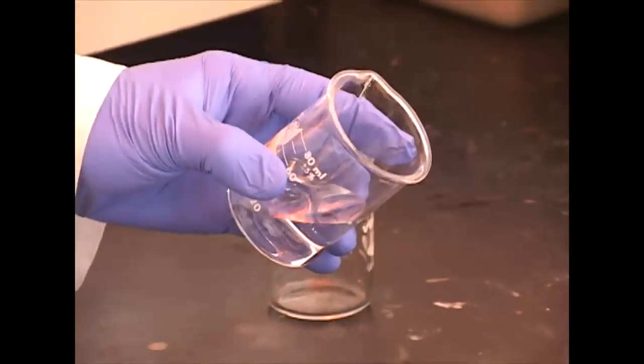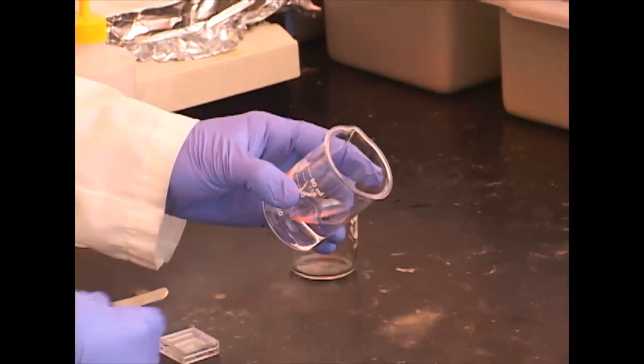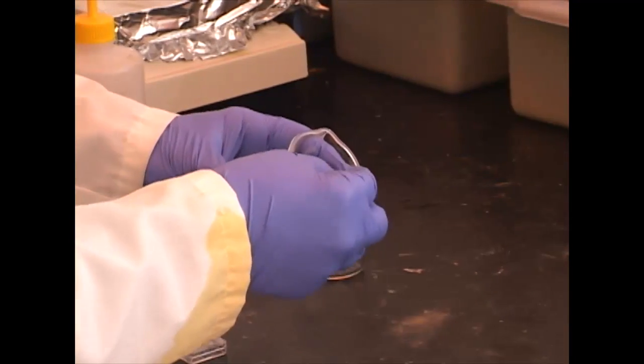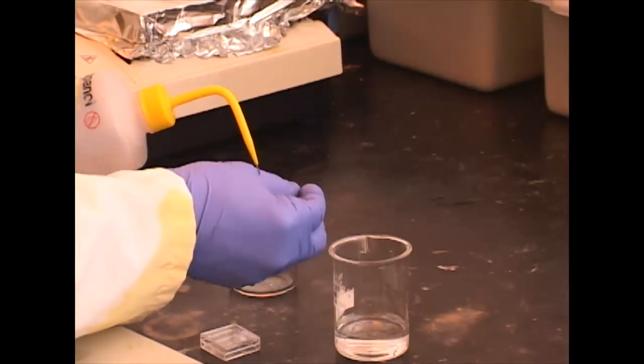The resist that we're using for our demonstration today is polymethyl methacrylate. It's a positive resist, which means the areas that are exposed to the e-beam, the bonds will break. And then after the exposure, we'll immerse it in a developer.